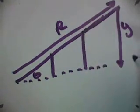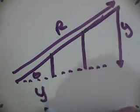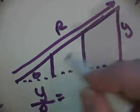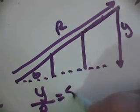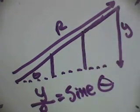That ratio, when they divided it out, turned out to be a number. And they gave that number a name. They called it the sine of that particular angle.